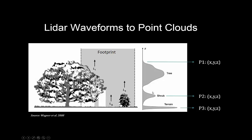Within this same footprint we have a little scrub, and so we get a second return. Even if that scrub had been under the tree, you might still get some sort of signal from the photons that make it through the tree canopy to the scrub, and then back from the scrub through the tree canopy back to the sensor.